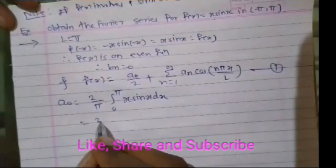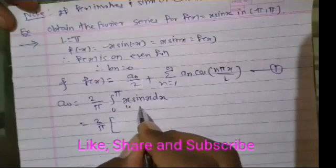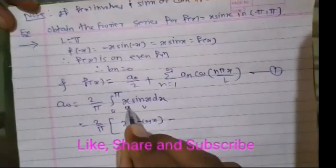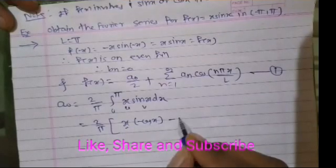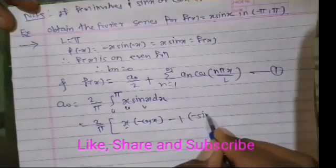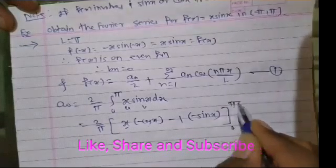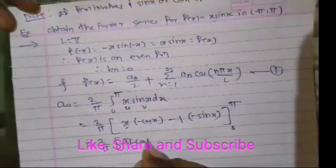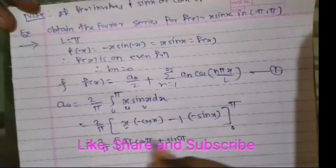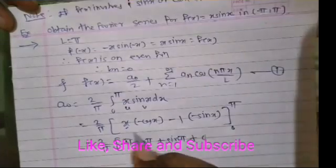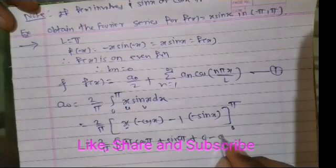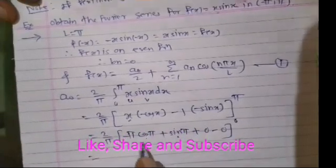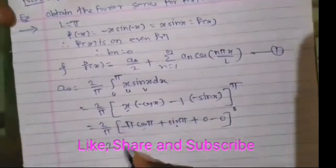We find this integral using the generalized rule of integration by parts, taking u = x and v = sin(x). So: x·(−cos x) − (1)·(−sin x), evaluated from 0 to π, multiplied by (2/π). At the upper limit x = π: −π·cos(π) + sin(π) = −π·(−1) + 0 = π. At the lower limit x = 0: all terms are 0. Therefore a0 = (2/π)·π = 2.